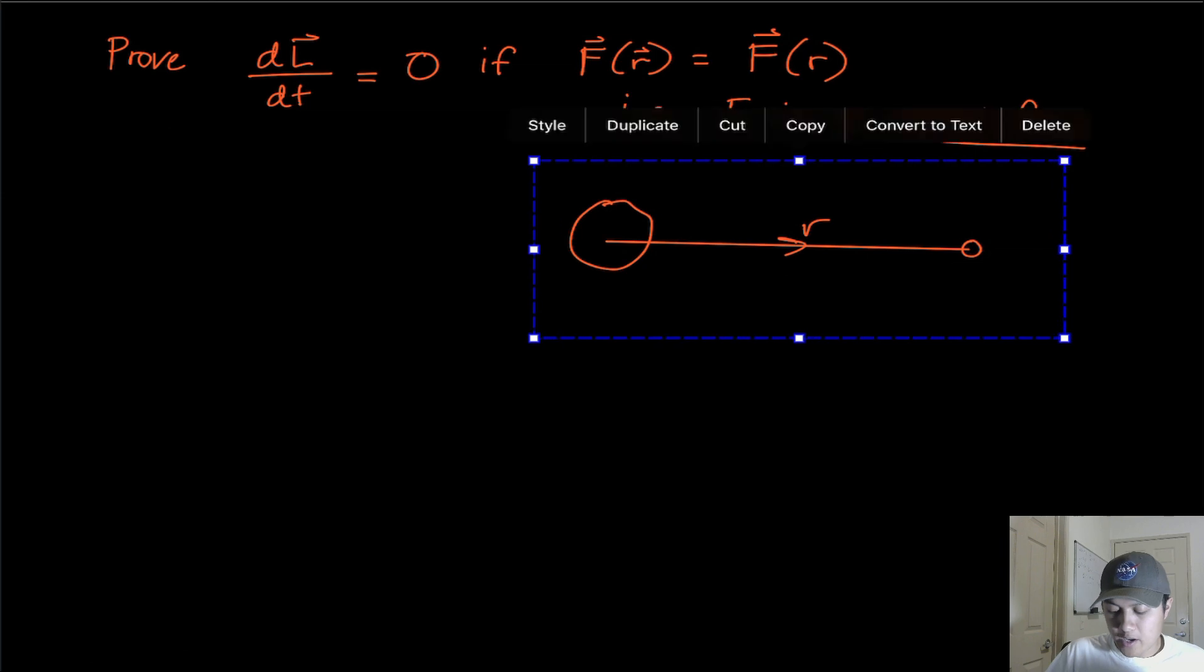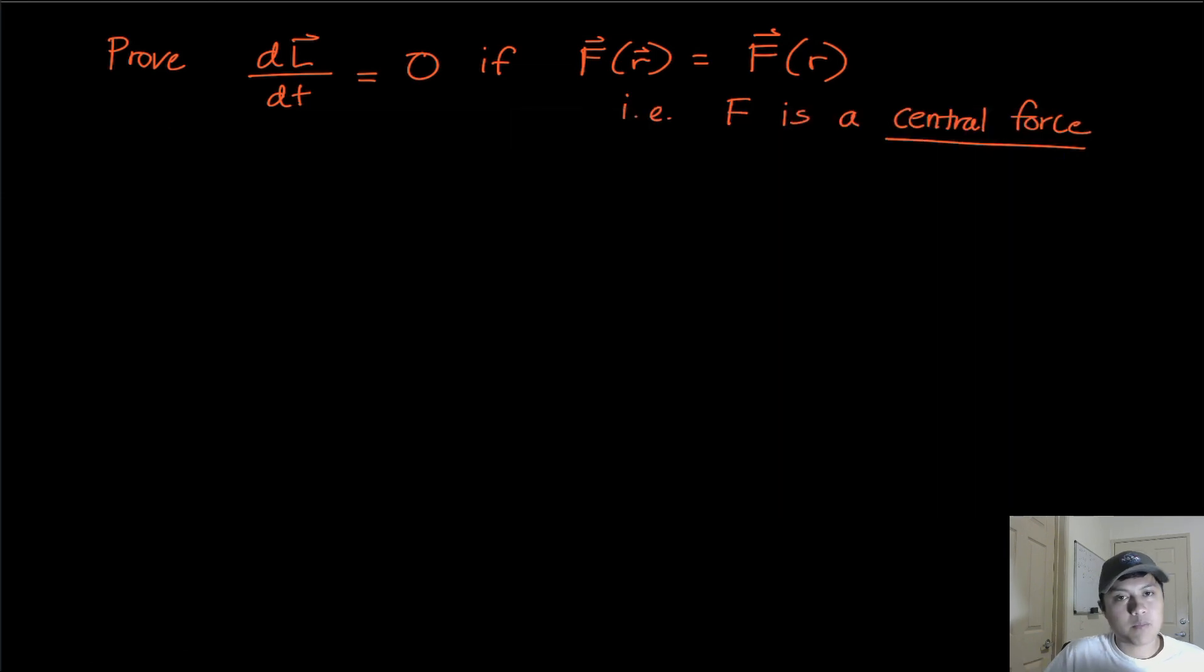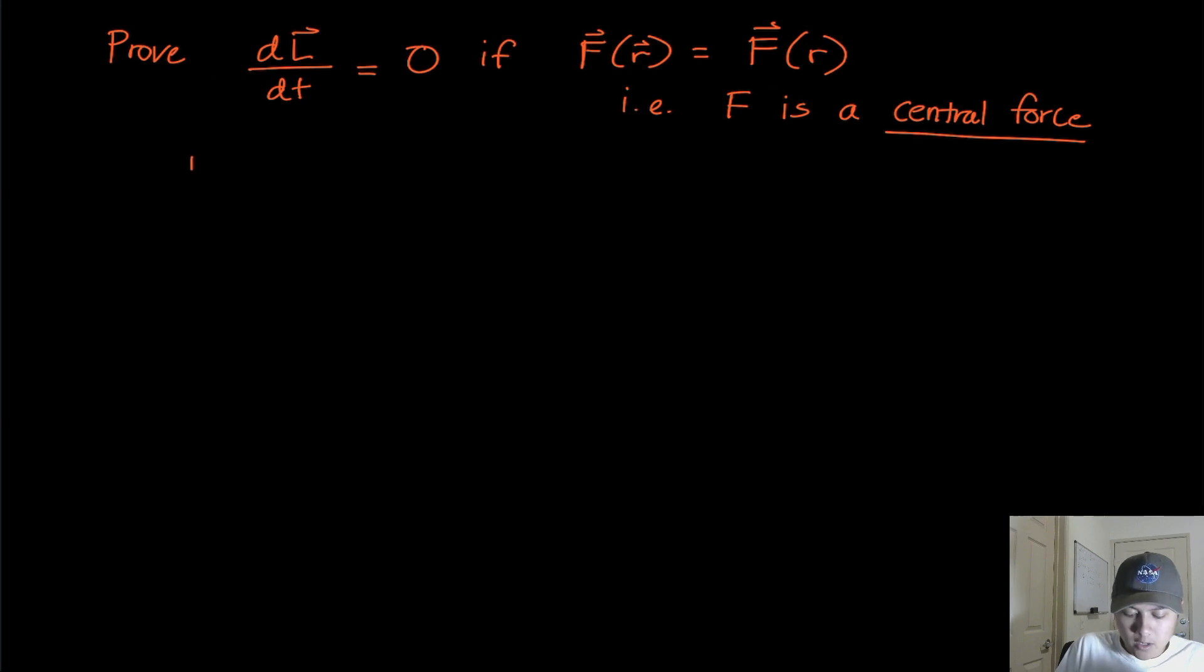So we're going to show that if the particle is acted on by a central force, its angular momentum does not change with respect to time. So the way we're going to do this is that we're going to write out the definition of angular momentum. Remember that angular momentum is just defined to be the cross product of the position vector with the momentum vector.